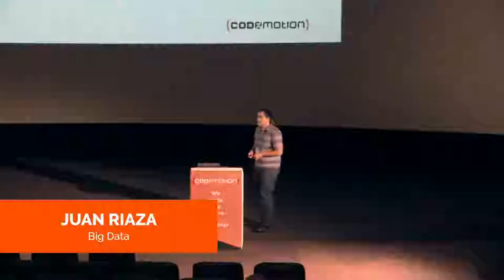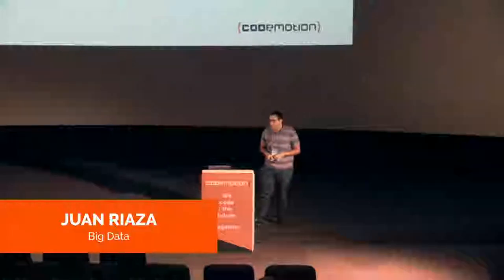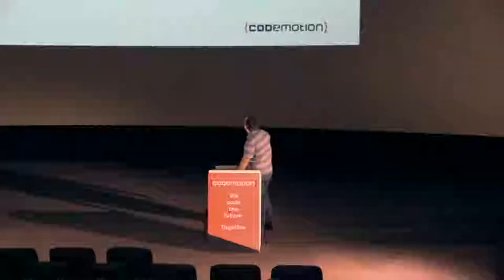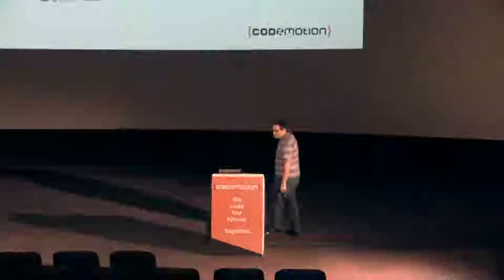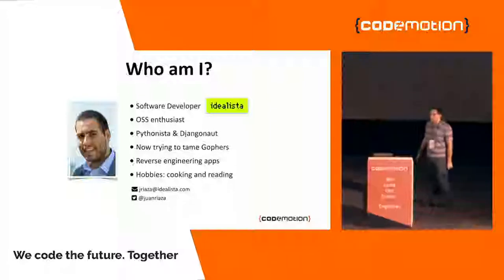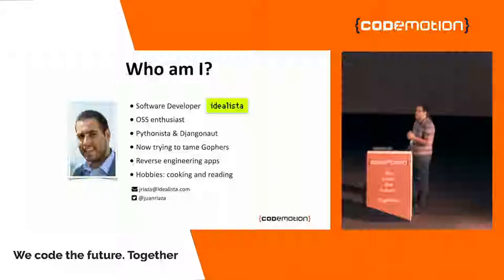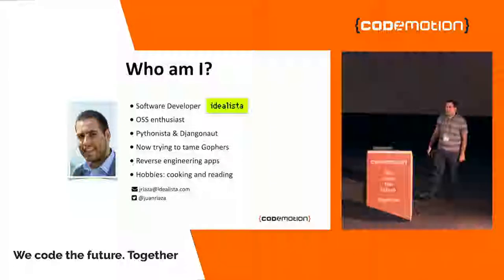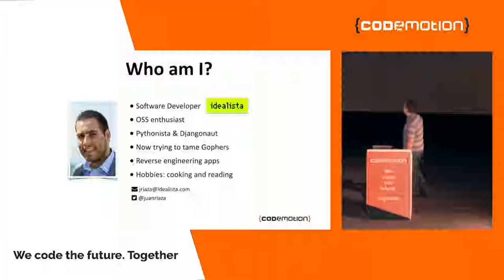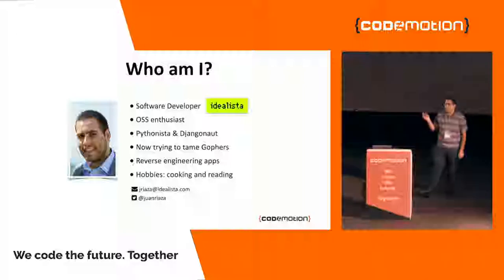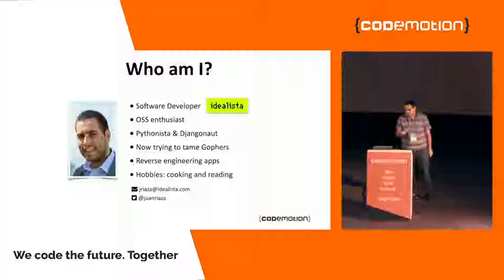Idealista is a real estate directory. We have presence in Spain, Italy, and Portugal. I'm an open source software enthusiast, a Pythonist and Django developer, having worked with Python and Django for more than 10 years. I'm also learning Go. I have a real hobby — I like to reverse engineer Android applications in my spare time. But I also have some normal hobbies, such as cooking. You can reach me via Twitter or email at any time.